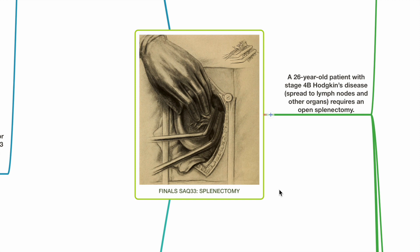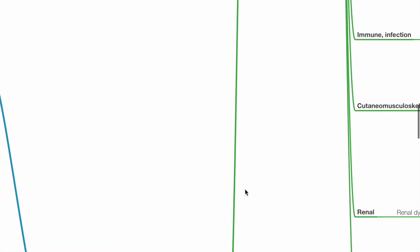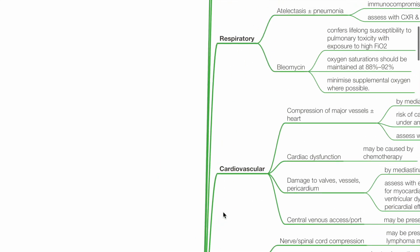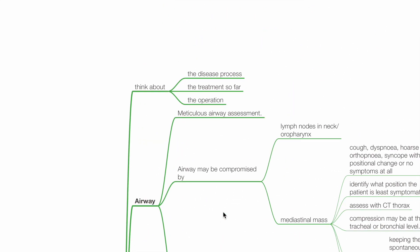Finals SAQ 33, splenectomy. A 26-year-old patient with stage 4B Hodgkin's disease with spread to lymph nodes and other organs requires an open splenectomy. List the specific factors that are of importance when planning your anesthetic management. Think about the disease process, the treatment so far, and the operation.